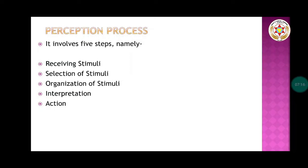Second, selection of stimuli: after receiving stimuli from the environment, some are selected for processing while others are screened out, as it is not possible for a person to process all stimuli. Third, organization of stimuli: selected stimuli need to be organized in some form to assign meaning to them. Fourth, interpretation: data collected and organized remains meaningless until meanings are assigned — this is called interpretation. Finally, action is the last phase — it is the resultant behavior emerging from the perceptual process, and it may be positive or negative depending on the favorable or unfavorable perception held by the perceiver.